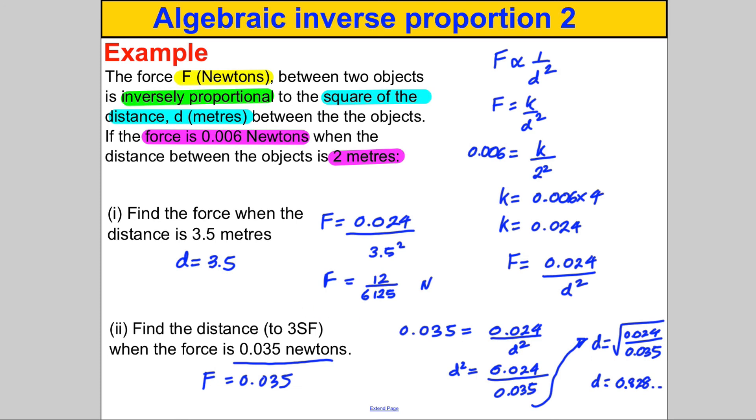But they said to round to 3 SF, so actually I should have gone a little bit further and I should have said that D is therefore 0.82807. And rounding that to 3 SF, I would say that D is therefore 0.828, and the unit is meters. And that's it for this video. Thanks for watching.